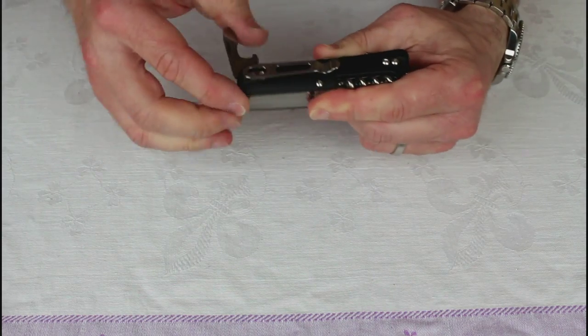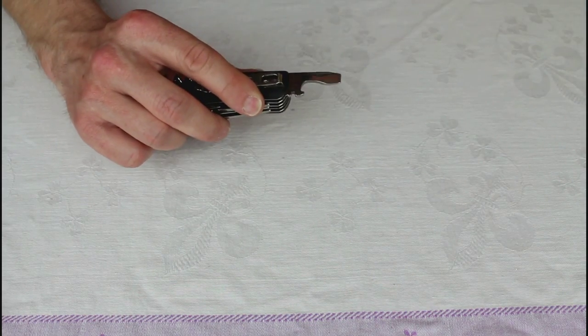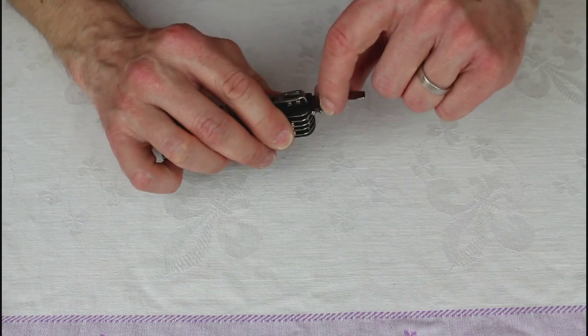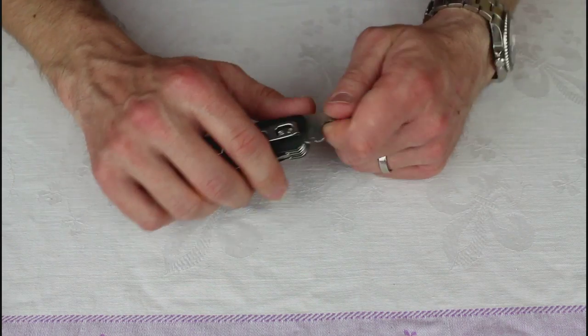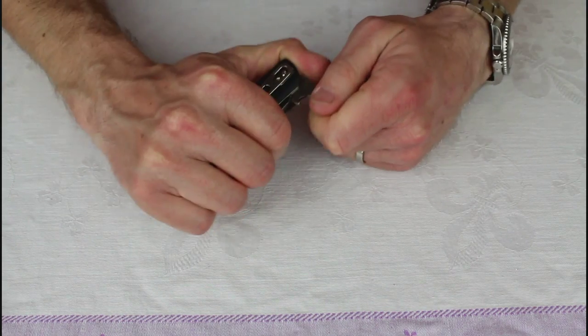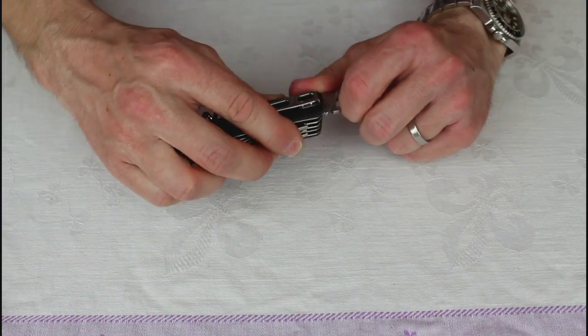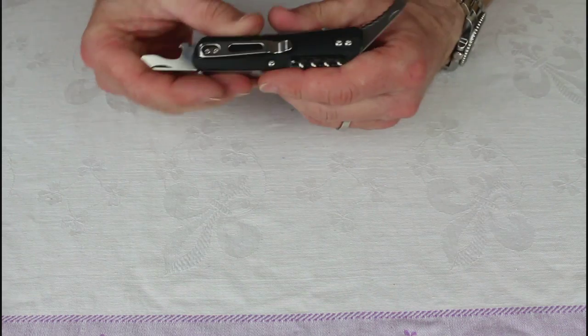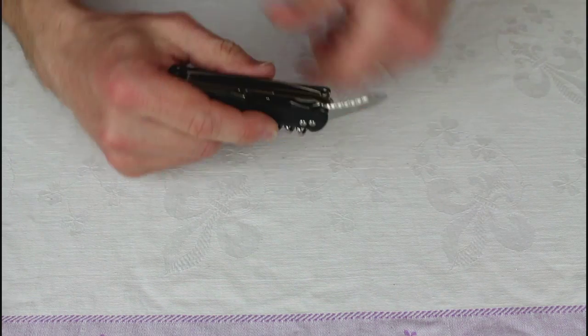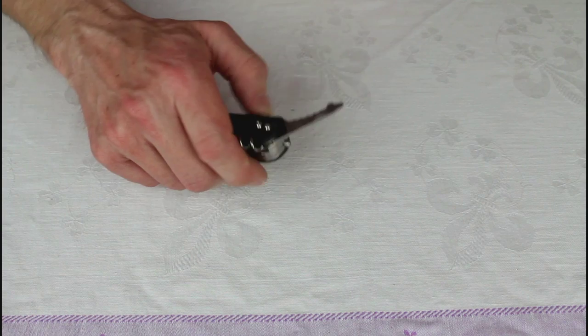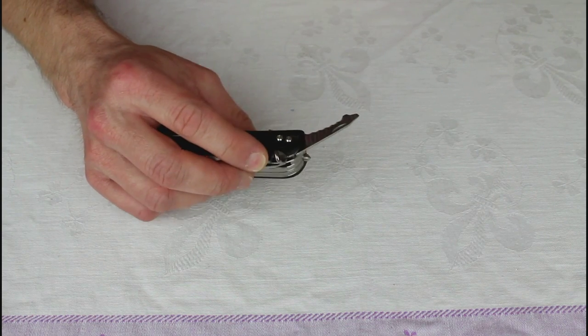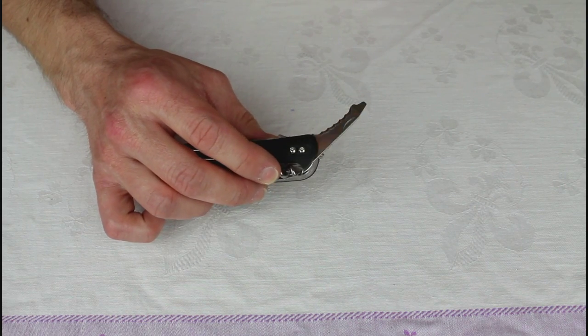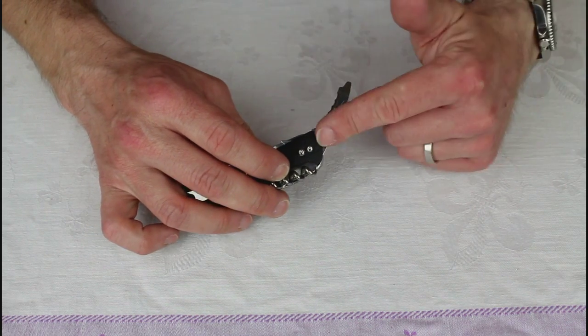Then we're on to the smaller tools, so here you've got the flathead screwdriver, can opener, and this little chap here is a wire stripper. What you need to do is you trap the wire in between there and the handle, and you can sort of pull off the outer.